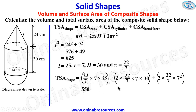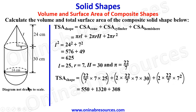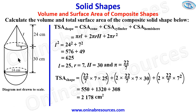Simplifying: the curved surface area of the cone is 550, the curved surface area of the cylinder is 1,320, and the curved surface area of the hemisphere is 308. Summing these gives 2,178 square centimeters, which is the total surface area of the composite solid shape.